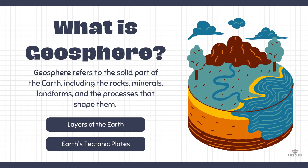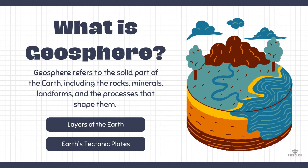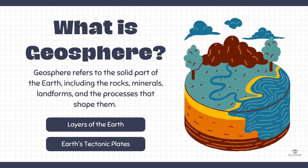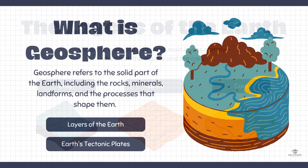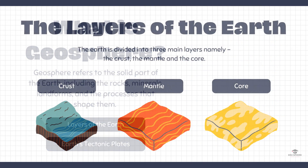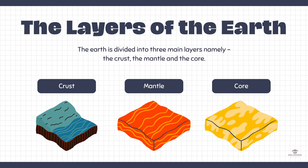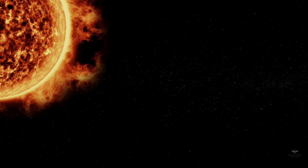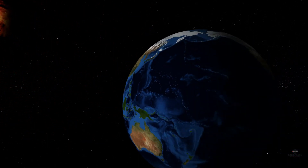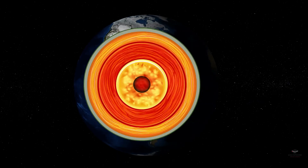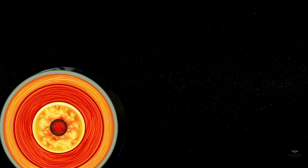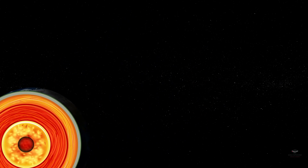The geosphere is the solid, rocky part of the Earth and it's made up of three layers: the crust, the mantle, and the core. Understanding the different layers of the Earth helps us learn about what the Earth is made of, how it is structured, and how it behaves.